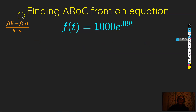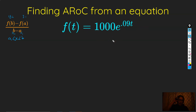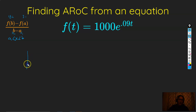Now, from an equation, finding average rate of change really boils down to slope again. We can find slope from a graph, from a table, and also from an equation. The formula is f(b) minus f(a) over b minus a, where x is between a and b. Think of f(b) as y2, f(a) as y1, b as x2, and a as x1 — it's slope. The equation I have here models an investment return.